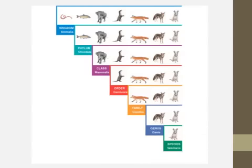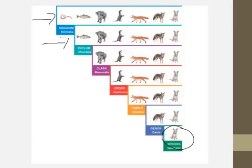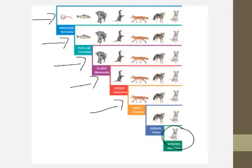Let's look at the taxonomy breakdown for a creature we all know — the household dog. Dogs are part of kingdom Animalia, a very broad category. They're part of the domain Eukarya, phylum Chordata (meaning they have a backbone), class Mammalia (mammals), order Carnivora (meaning they eat meat), family Canidae (the family that includes foxes, dogs, and wolves), genus Canis (meaning they are a dog), and species familiaris. So you can see we go from most broad to least broad looking at the taxonomy.